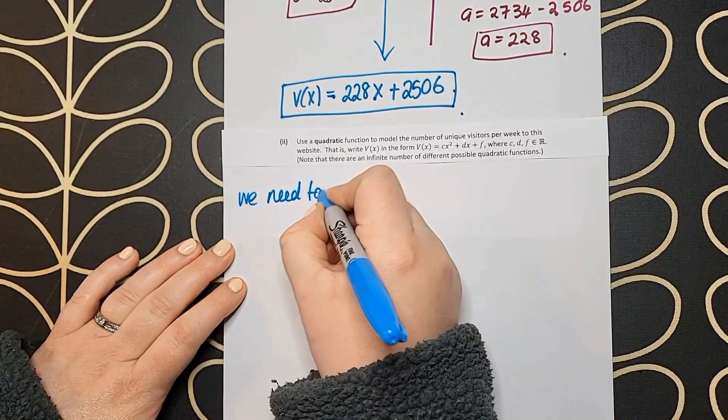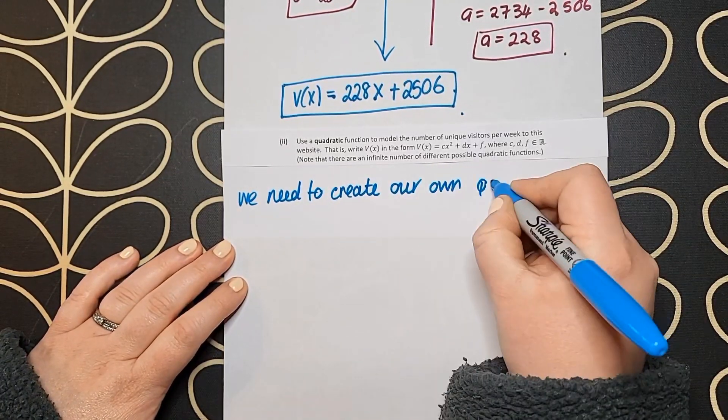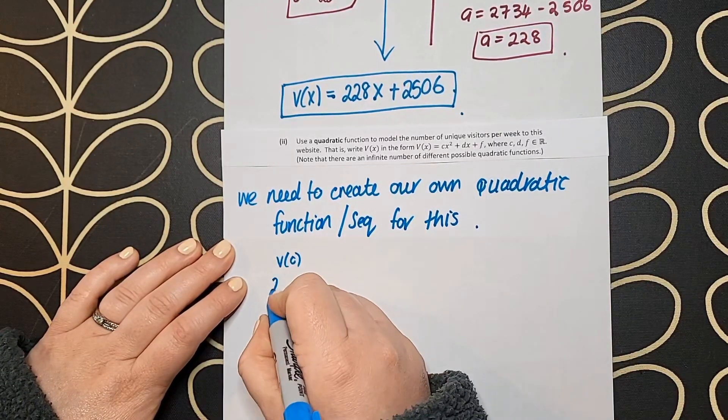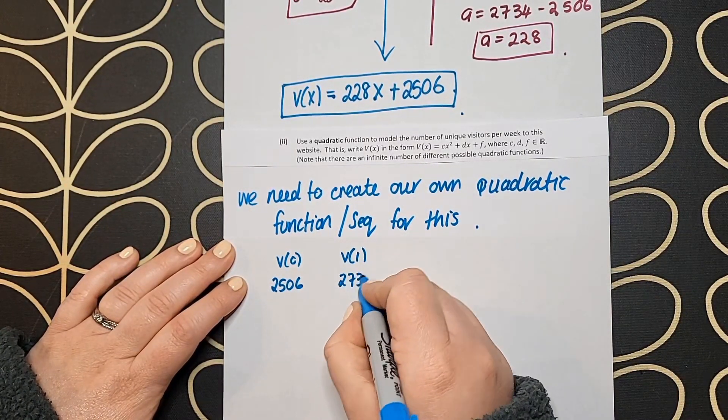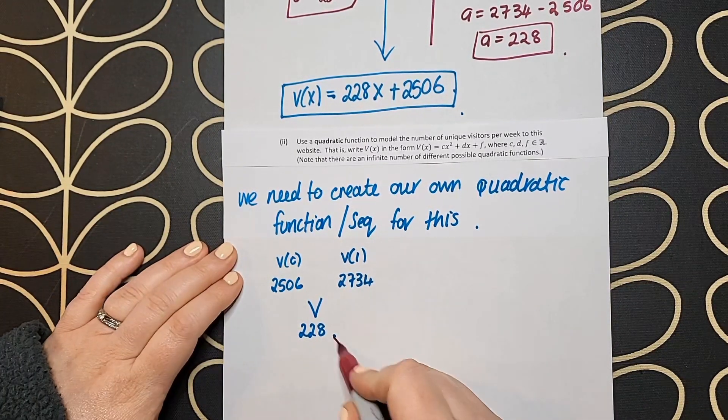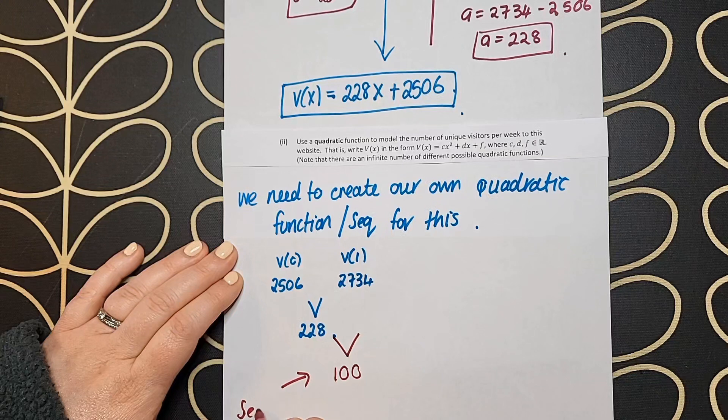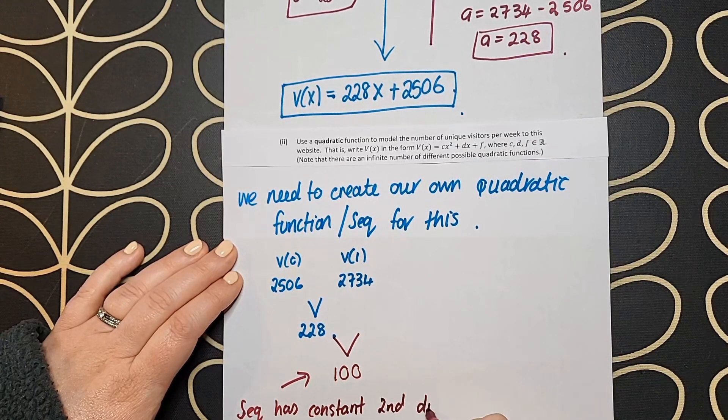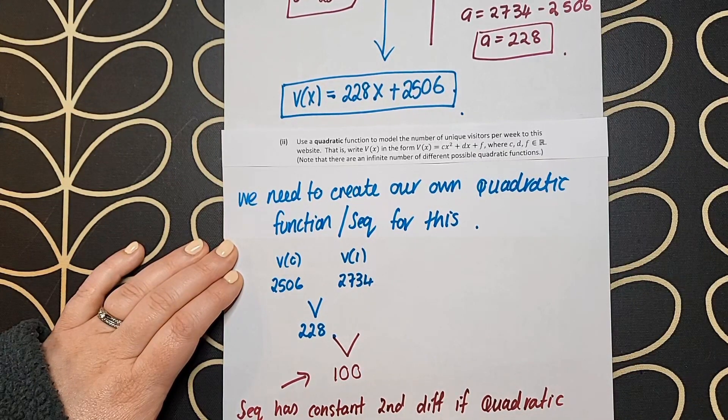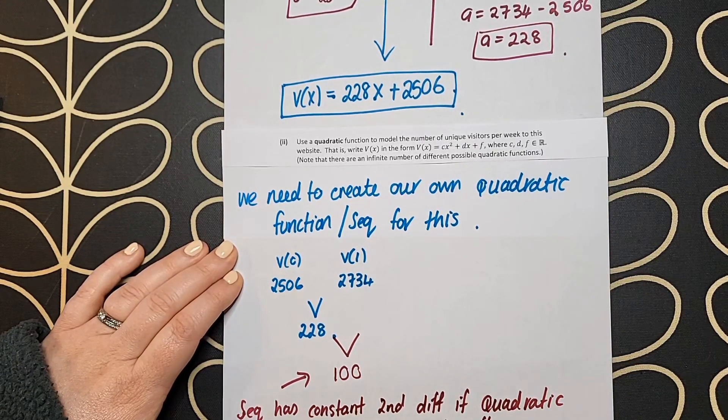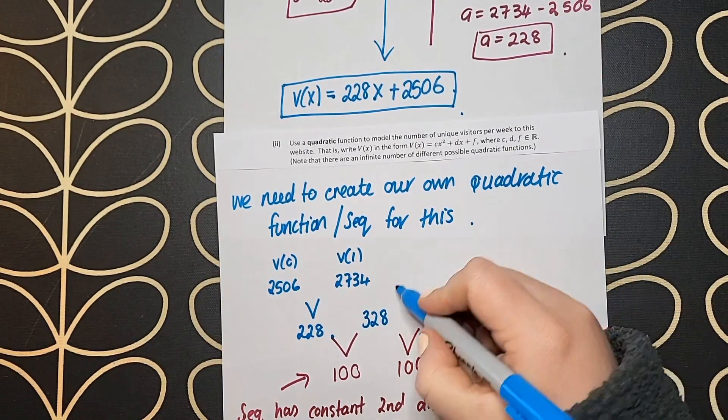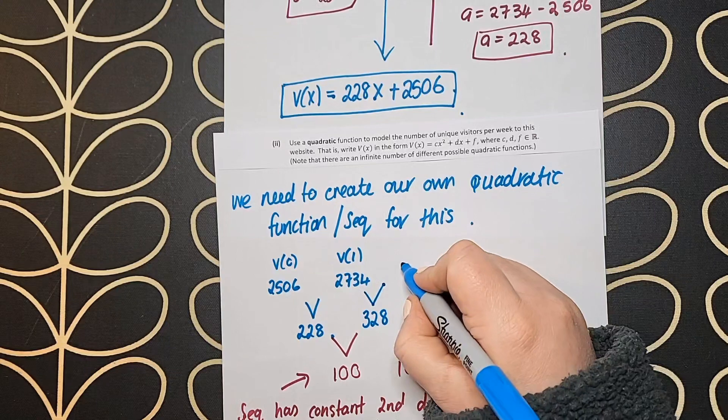In part 2, we're asked to find a quadratic function. We're given v(x) = cx² + dx + f. There's always more work with quadratics, and all we know is the first two values: 2506 and 2734. To establish this is quadratic and find information about visitors at different weeks, I need to create a quadratic sequence.